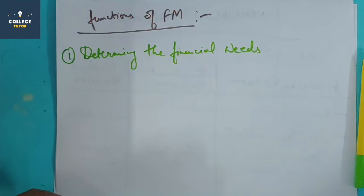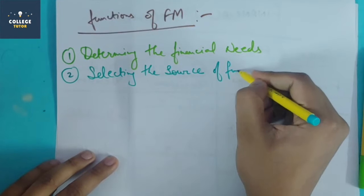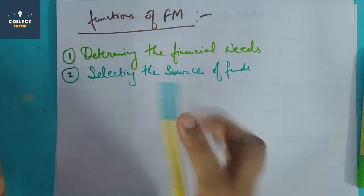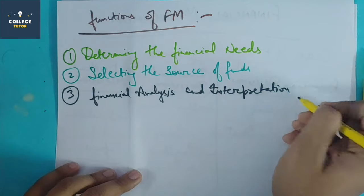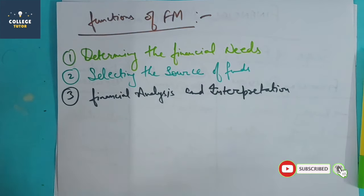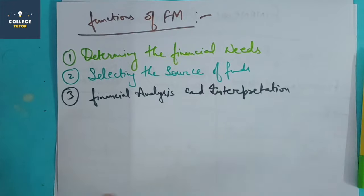Next is identifying the source of funds — whether from a bank, the unorganized sector, or other sources. After that, financial analysis and interpretation: the financial manager regularly analyzes the financial conditions, assesses the impact of decisions, prepares reports, and makes further decisions on that basis.